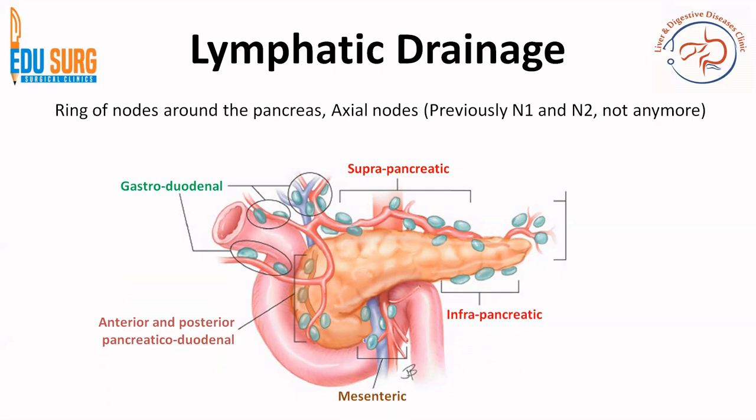Along the vessels, gastroduodenal nodes and the anterior and posterior pancreaticoduodenal nodes — these are basically the nodes along the gastroduodenal vessels and the PDA. You have the supra and infrapancreatic nodes, which will be respectively along the upper and lower border of the pancreas. You also have the mesenteric nodes along the mesenteric vessels and the splenic and gastrosplenic nodes. This is the first ring of nodes that drain lymph from the pancreas.